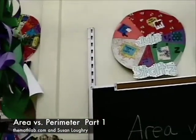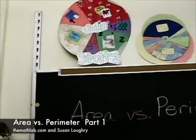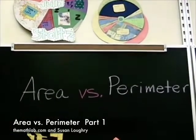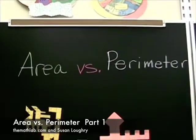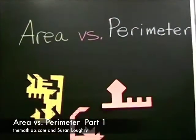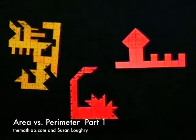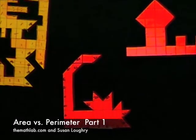Area and perimeter are two very different things. It's possible to create shapes that have the same area but vastly different perimeters. Come on in and make some of these shapes with us.